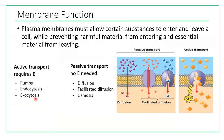Active transport includes pumps, endocytosis, and exocytosis. Passive transport does not require ATP energy — it still needs energy, but it uses the kinetic energy of its ions or molecules. Examples of passive transport include diffusion, where substances move through the lipid bilayer, and facilitated diffusion, where special proteins facilitate this movement and help molecules move in and out.